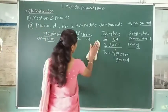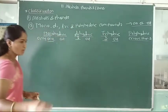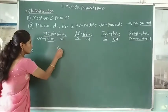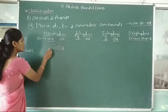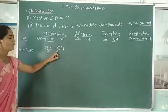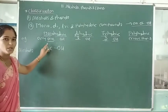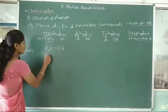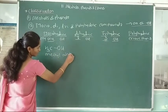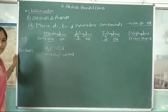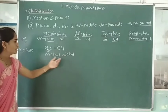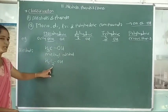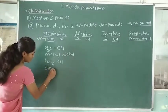Now we will see some examples. First, examples of alcohol. In monohydric compounds, only one OH group is attached to a saturated carbon atom. This is called a monohydric alcohol. For example, methyl alcohol (CH3OH) and ethyl alcohol (C2H5OH) — only one OH group attached to the ethyl group.